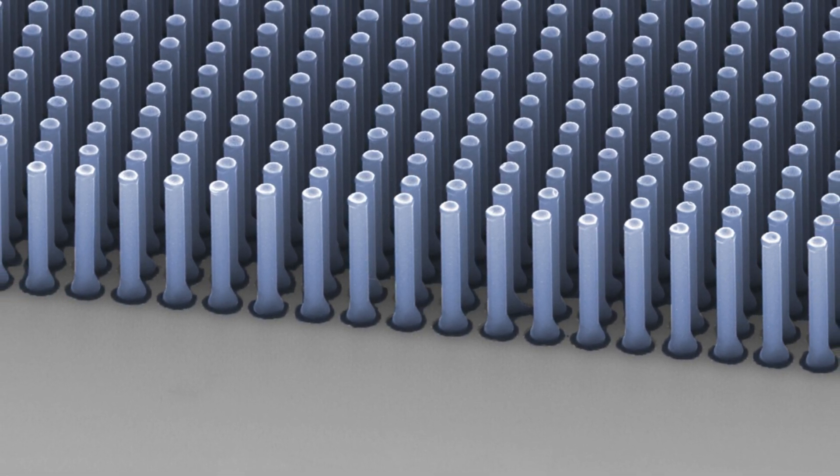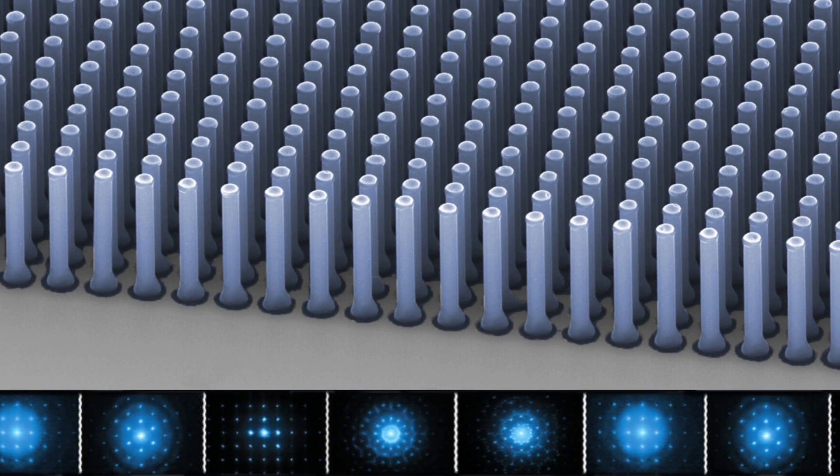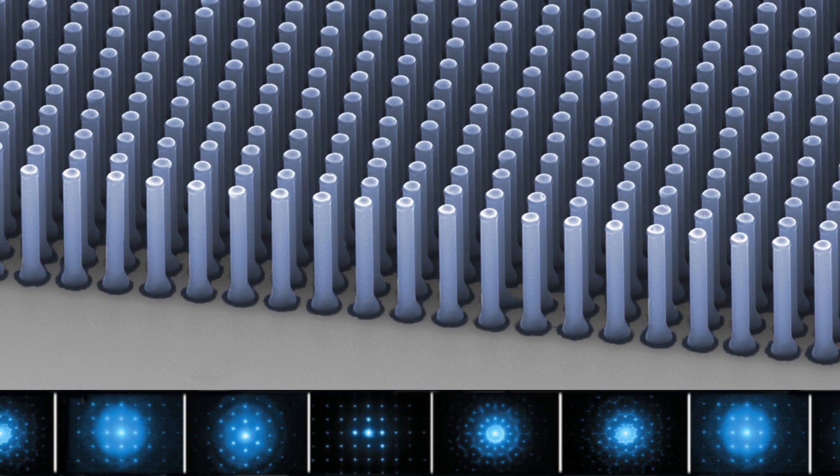Depending on how we arrange these tiny wires, we can control the light differently to scatter, trap, or diffract the input light as we wish.